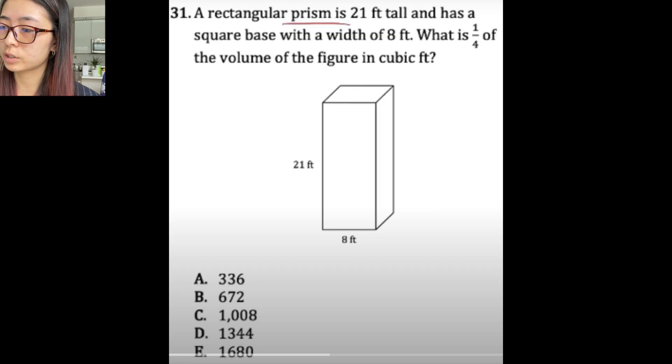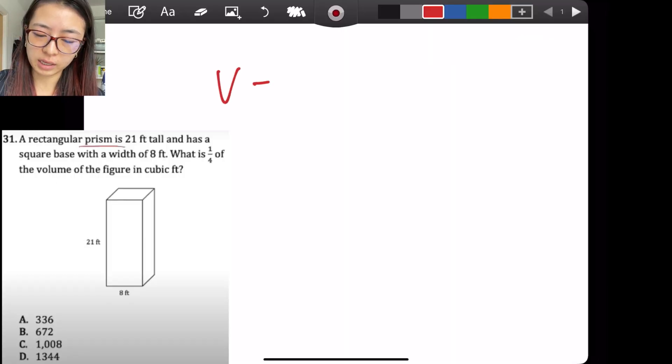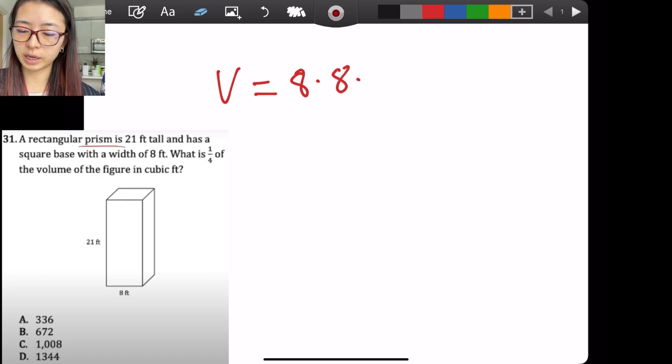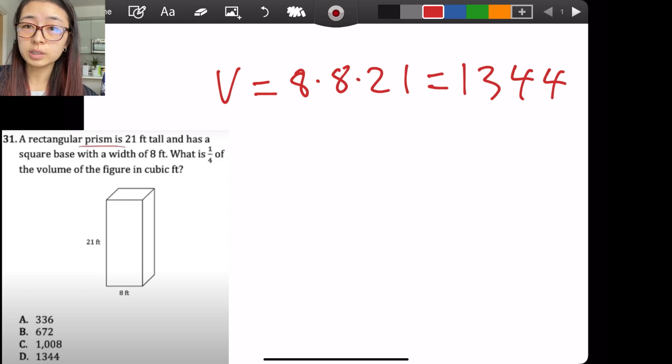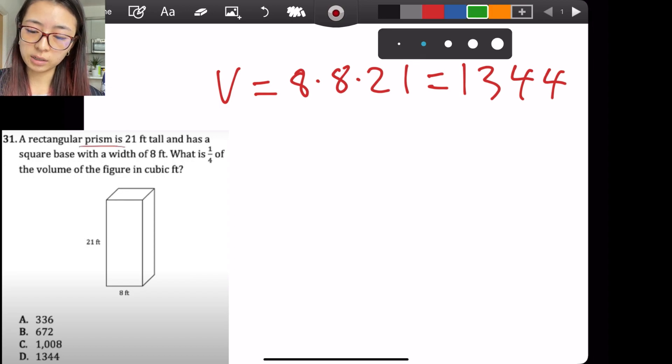A rectangular prism is 21 feet tall and has a square base with a width of 8 feet. What is one-fourth of the volume of the figure in cubic feet? They say that we first do the volume, which is length times width times height. So yes, 8 times 8 because it's a square base, times a height of 21. But what they don't do well is that they actually multiply this whole thing out to get 1344. But this is a useless intermediate number because the result we want is the volume divided by 4.